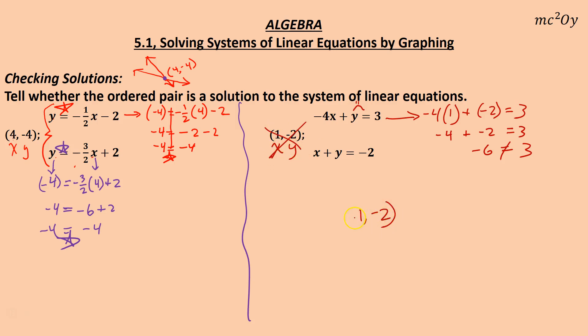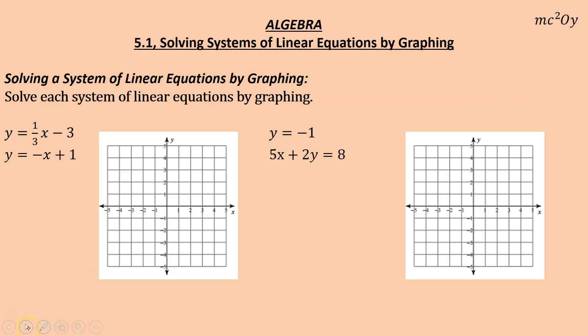So 1, negative 2 is not a solution to the system. Whereas in the previous one, we did find that 4, negative 4 is a solution to the system. Let's go ahead and try another one here.